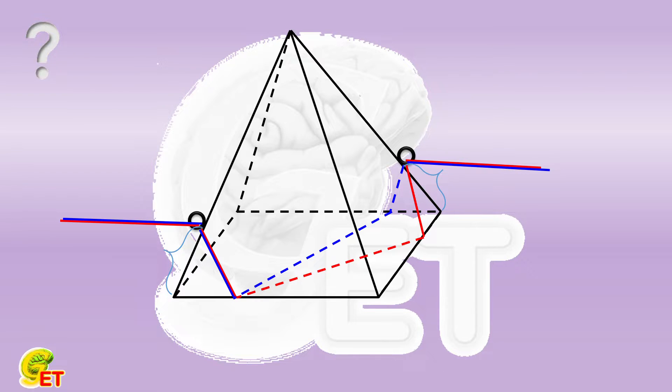If the rope is tightened, would you like to prove the rope needed to pass through the adjacent edges of the base is shorter than the one needed to pass through the opposite edges of the base? Why not give a try, and we will come back soon.